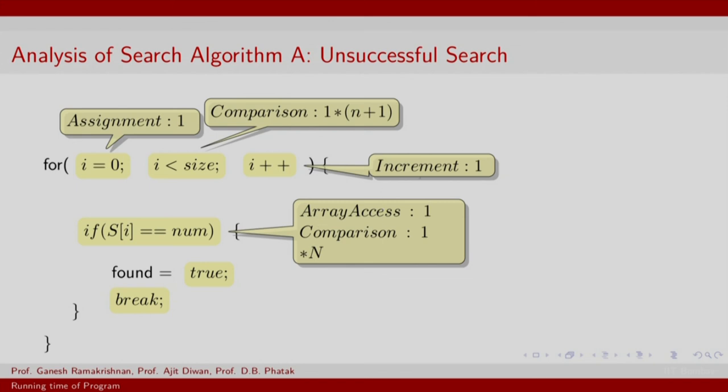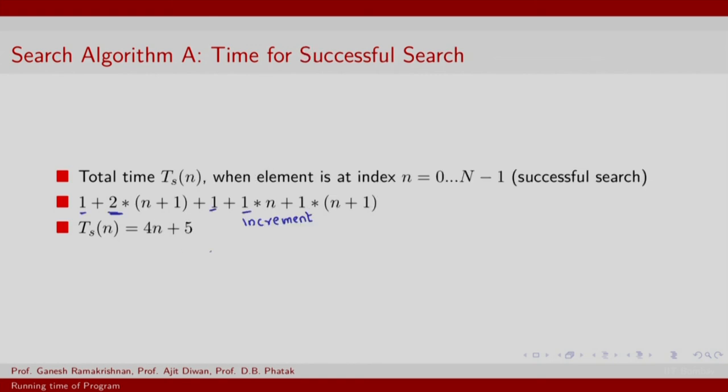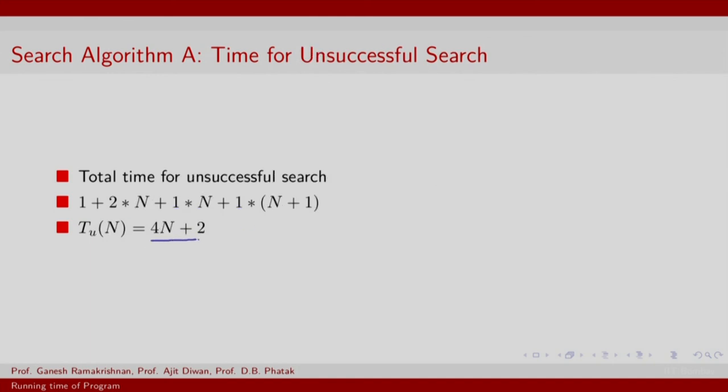How about an unsuccessful search? Which means you actually had to go until the end of the sequence s. So, in such a case you would never come across the found and break statement. So, you will have to do this until the end, the increment, the array access and the comparison. So, the cost incurred here is basically 4n plus 2. So, please note the comparison here is between 4 times small n plus 5 and 4 times capital n plus 2.